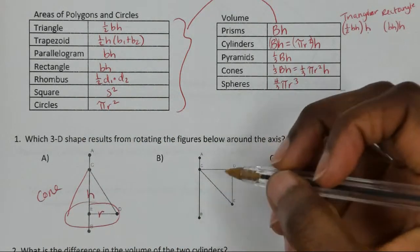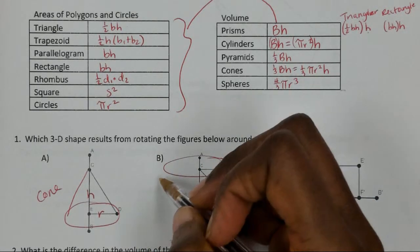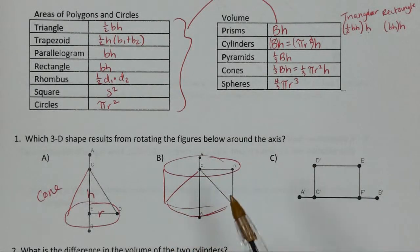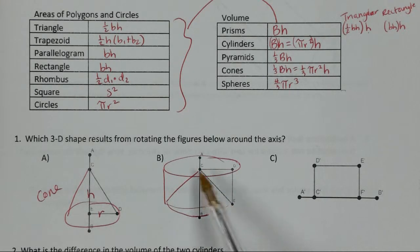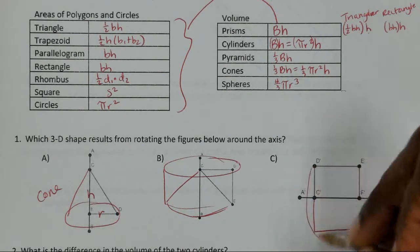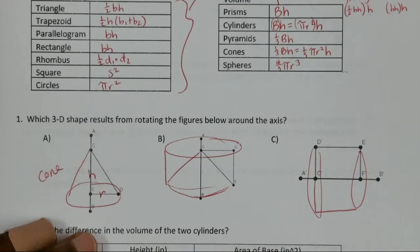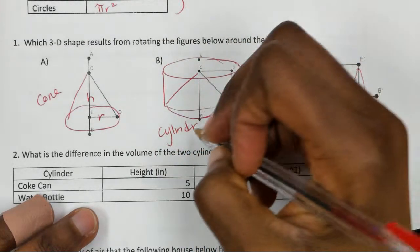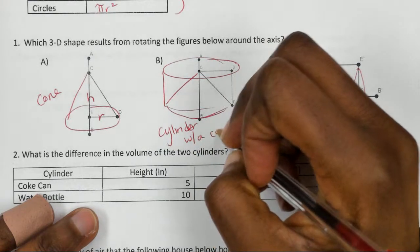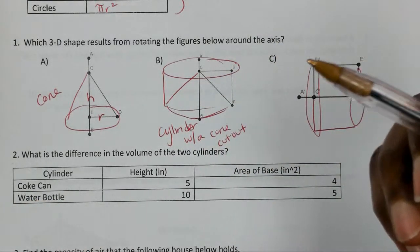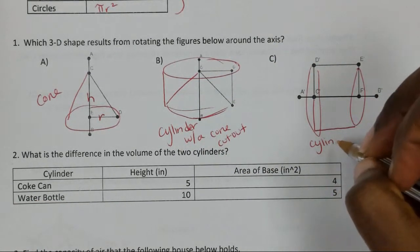For the second figure, rotating around the axis makes a circular piece, but there's a gap — it's almost as if you had a cone missing from a cylinder. For the third figure, rotating around the axis makes a cylinder. So that second one is a cylinder with a cone cut out, and the third is just a regular cylinder.